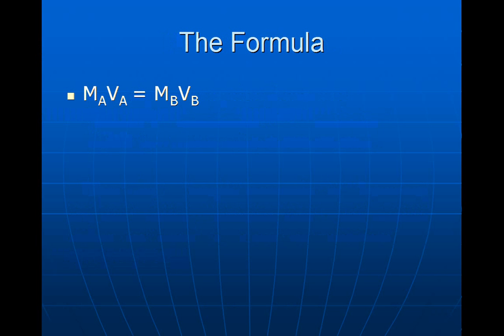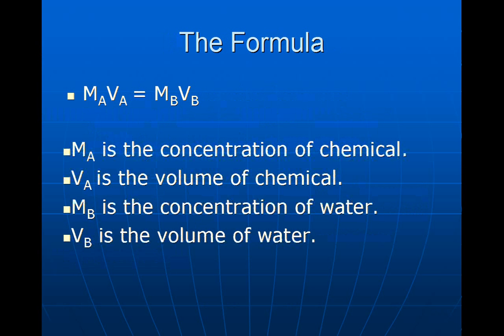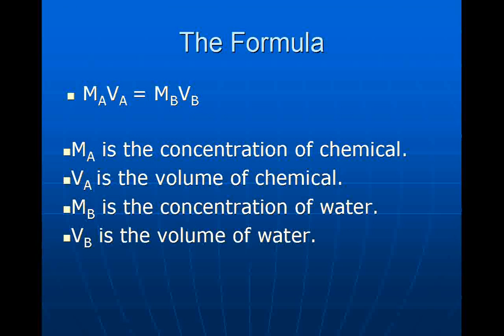M sub A times V sub A equals M sub B times V sub B. Now, what do these mean? M sub A is the concentration of the chemical. V sub A is the volume of that same chemical. M sub B is the concentration of the distilled water. And V sub B is the volume of the distilled water. Now, in using this formula, we're going to have to have three of the four variables so that we can solve for the fourth one.